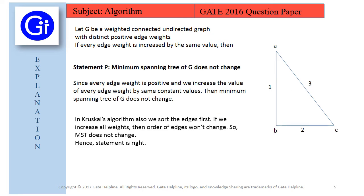In Kruskal's algorithm also we sort all the edges first. If we increase all weights then order of edges won't change. In Kruskal's algorithm if we multiply all the edges by 2 or 3 or 6 or whatever, then the order does not change because we are multiplying with the same value. So the order will be same, 1, 2, and 3.